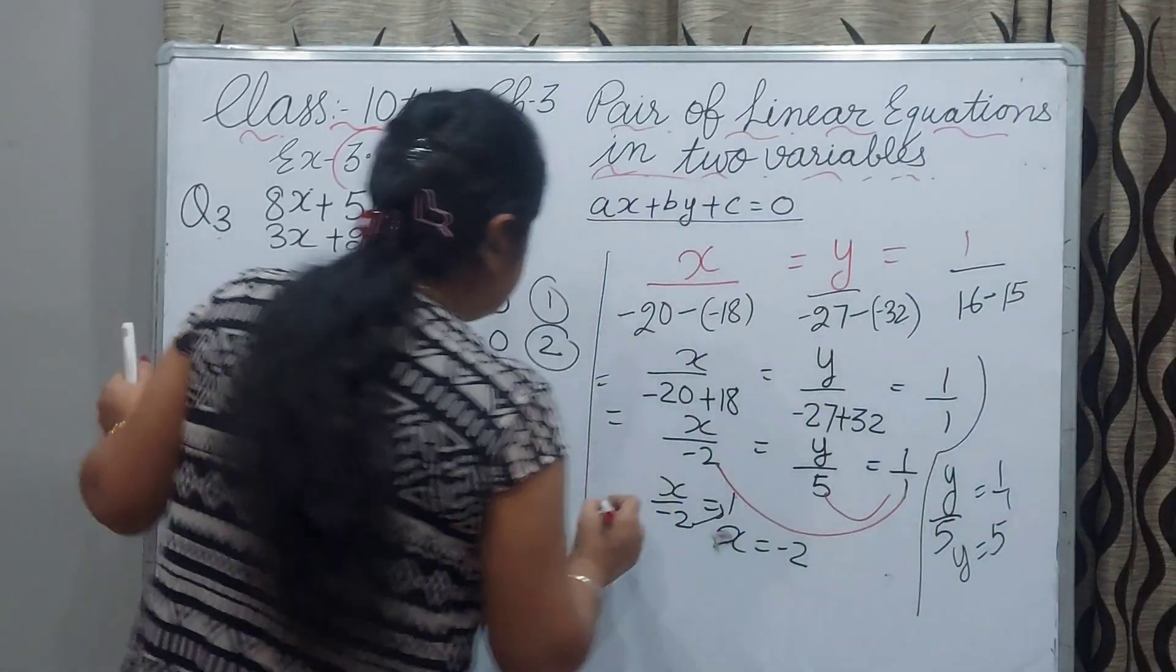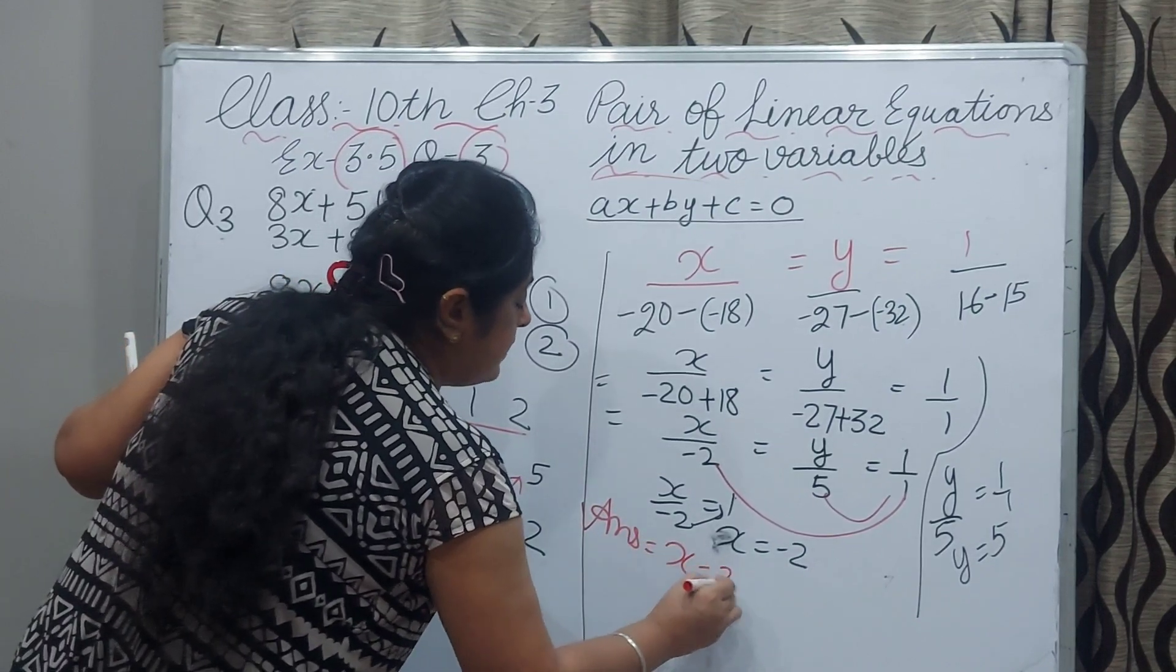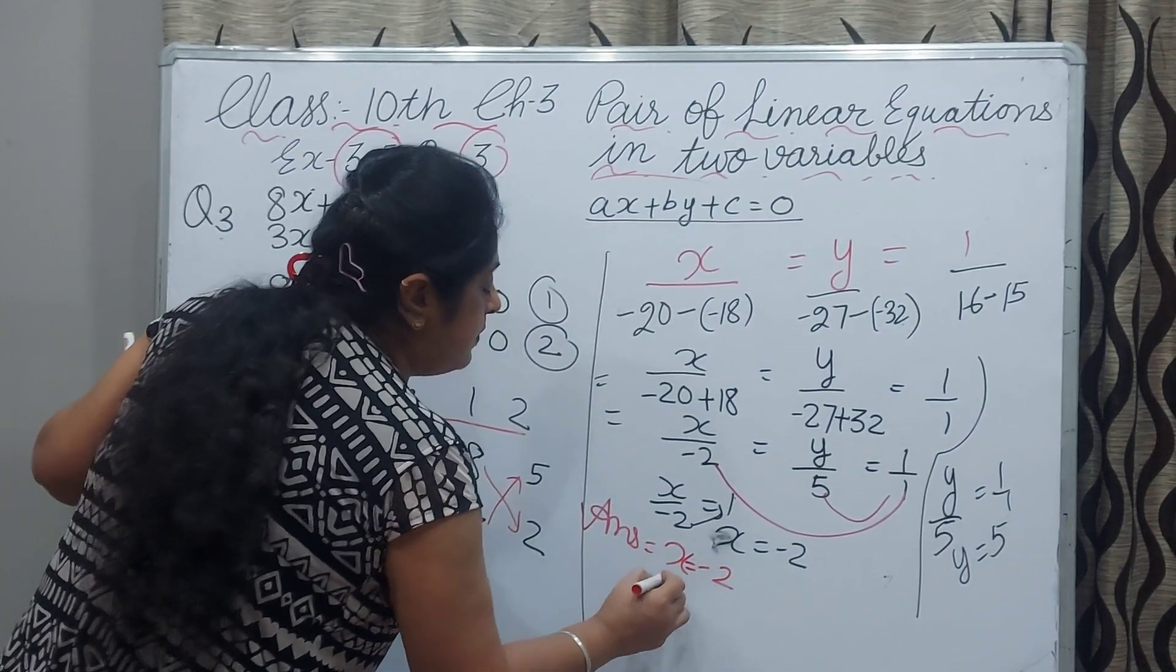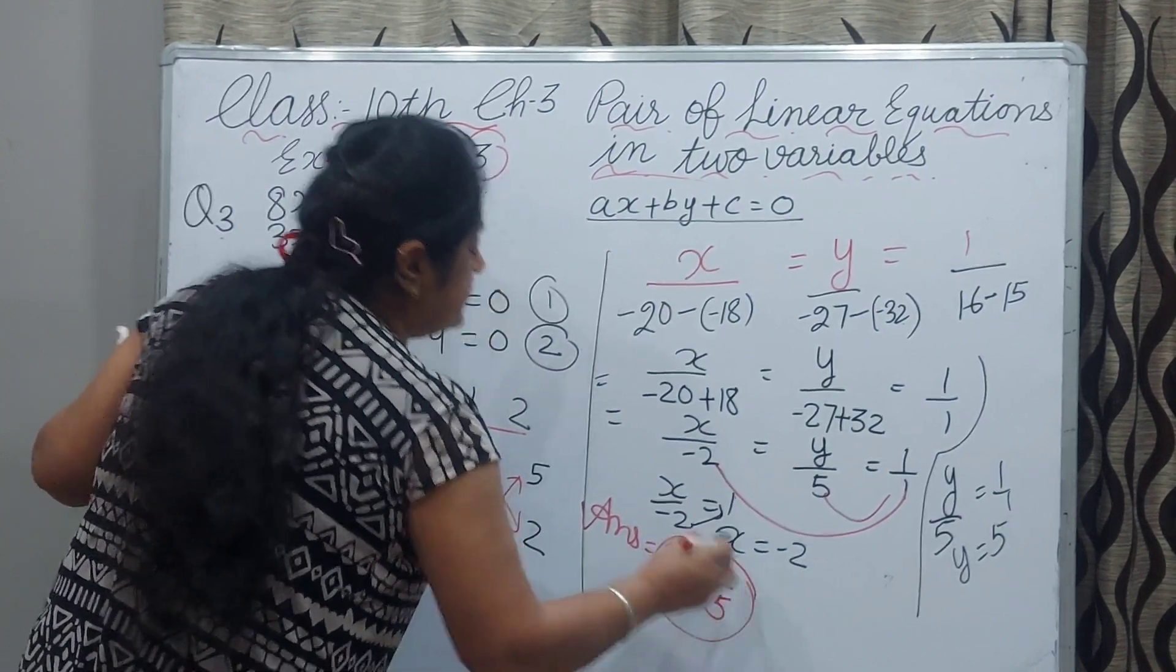Now your answer is x value is minus 2, x equals minus 2 and y equals 5. And that is your answer.